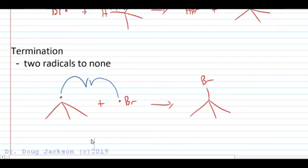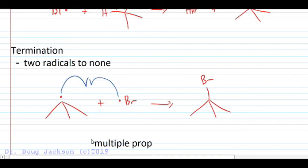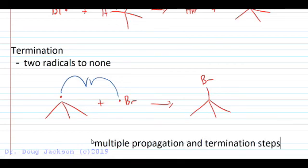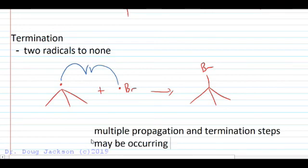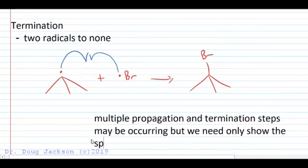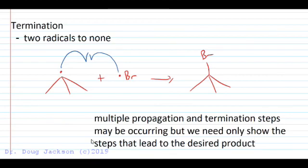Multiple propagation and termination steps may be occurring, as your reading will tell you, but we need only show the steps that lead to our product — those are the only ones important for a mechanism showing the formation of a particular product, even though multiple steps can be occurring at any given time. Radicals are very unstable; they react with just about anything they come into contact with. It's just a matter of what happens faster — forming the more stable product occurs faster, giving the more probable radical and the final most abundant product.